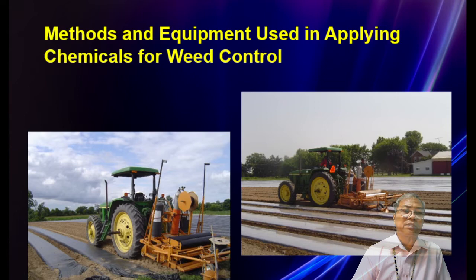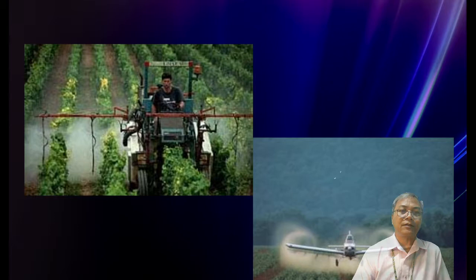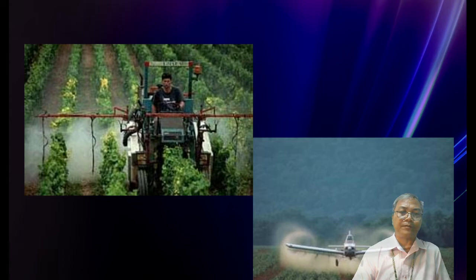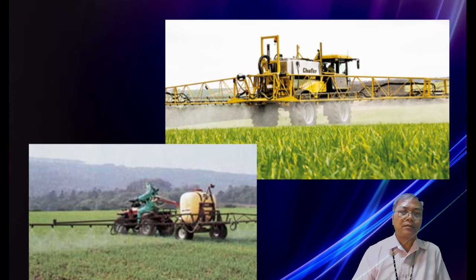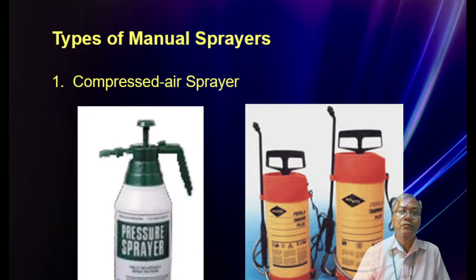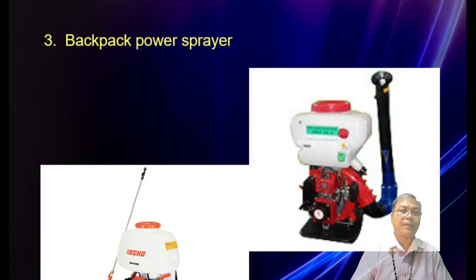Methods and equipment for applying chemicals for weed control: Number one is fumigation, applying gaseous pesticide. Number two is dusting, the application of pesticide in dust form, done by tractors or by airplane — as commonly seen in banana plantations in Davao. Number three is spraying, the application of pesticide in liquid form. Types of manual sprayers include the compressed air sprayer, the backpack or knapsack sprayer, and the backpack power sprayer, which is motorized so you do not have to pump it yourself.